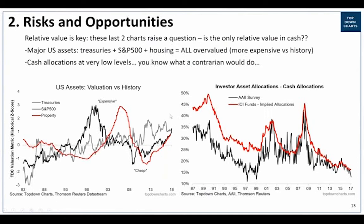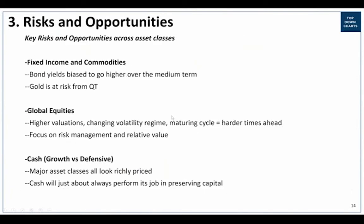To finish with a summary of risks and opportunities across the major asset classes: bond yields are biased to go higher over the medium term; gold is at risk from quantitative tightening; global equities face higher valuations, changing volatility regime, and a maturing cycle - equals harder times ahead. When you get to this point in the cycle, the focus on risk management, having a process, a set of indicators, and a plan for how you're going to manage equity exposure becomes critical. There are two ways to approach planning for a bear market - you can be preemptive and say valuations are high, monetary policy is tightening, and step out and stand on the sidelines.